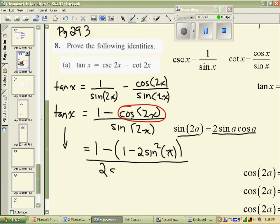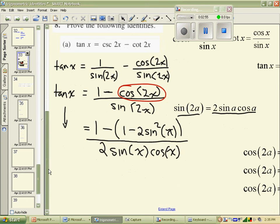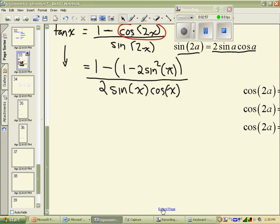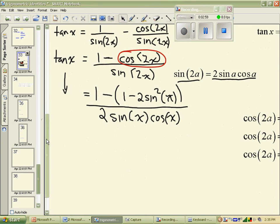Okay, so now we've only got x's instead of 2x's, so it's starting to look a little bit prettier. What can we do from here? We have some algebraic manipulation to go into. This negative goes on to each of the terms in the brackets. You have 1 subtract 1, which makes 0, and that would leave a negative, and negative 2 makes a positive 2 sine squared in the numerator. And in the denominator, you have 2 sine of x cos of x.